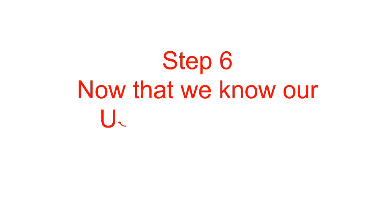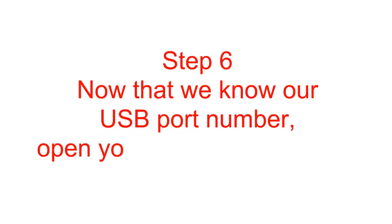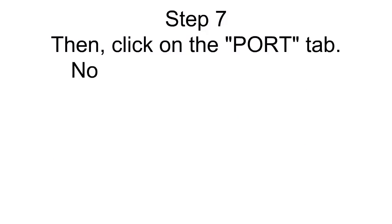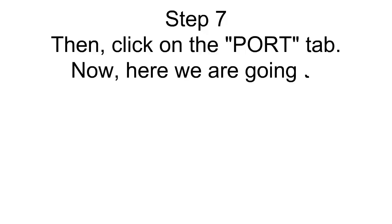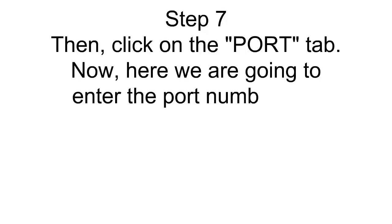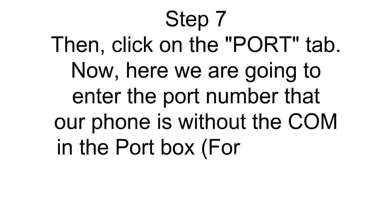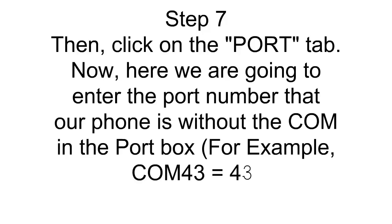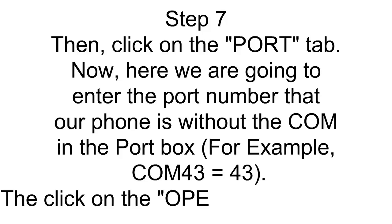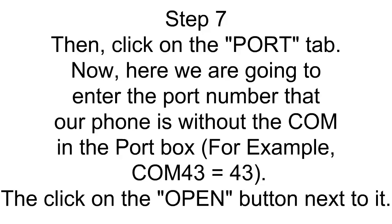Step 6. Now that we know our USB port number, open your RealTerm program. In the RealTerm Display tab, make sure to check the Half Duplex box. Step 7. Then click on the Port tab. Here we are going to enter the port number that our phone is on, without the 'COM', in the port box. For example, COM43 equals 43. Click on the Open button next to it.